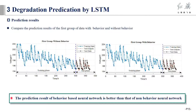The results are shown in the figure. In the first group of data, we compared the effects of two prediction methods. The prediction results of the behavior-based neural network are better than the non-behavioral neural network. Our method has good performance for system dynamic behavior data.